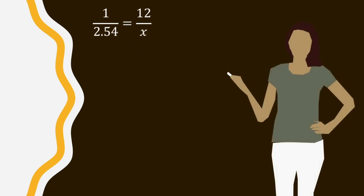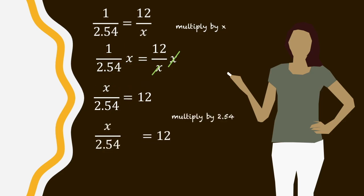Multiplying by x on both sides gives us 1 over 2.54 multiplied by x equals 12, the x's cancel out. And then we have x on 2.54 equals 12. If we multiply by 2.54 to cancel out on the left-hand side, we'll have x equal to 12 times 2.54 or 30.48.